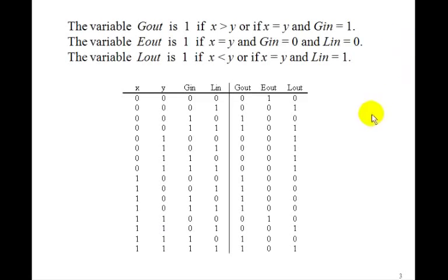Now we can make this truth table. Remember Gout is going to be 1 if x is greater than y. Well, here's that x is 1 and y is 0, so we've got four 1's here.